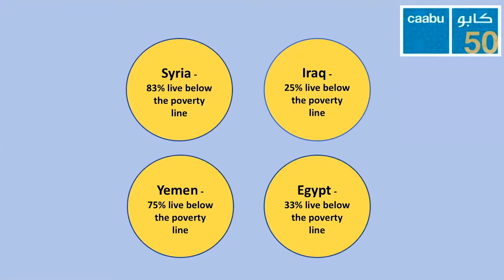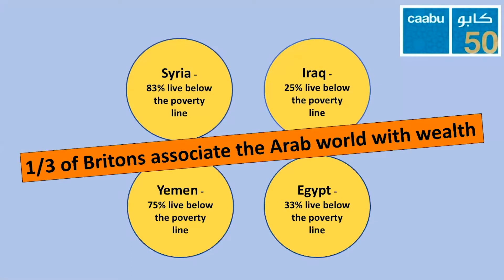According to the poll done by Kaaboo and YouGov, which I told you about earlier, a third of Britons interviewed associate the Arab world with wealth, even though the Arab world is home to some of the poorest countries in the world. Just for context, Syria and Yemen are currently in conflict, and there are many displaced people, which has exacerbated the current economic situation there.